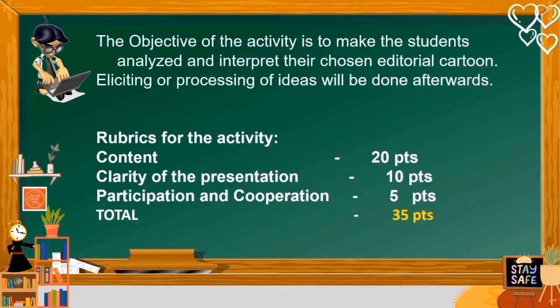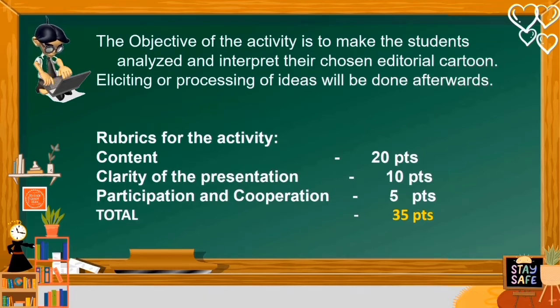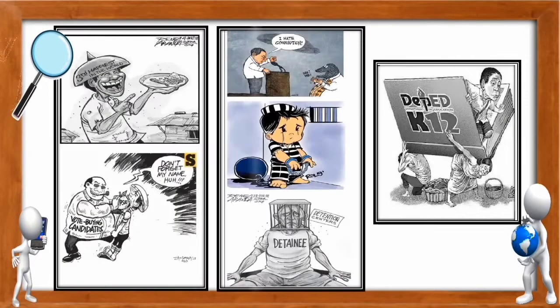For content, 20 points. Clarity of the presentation, 10 points. Participation and cooperation, 5 points. For a total of 35 points. Here's the editorial cartoon — make sure to analyze and understand it.